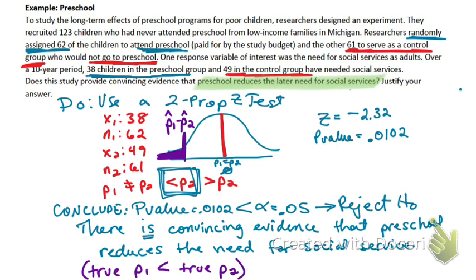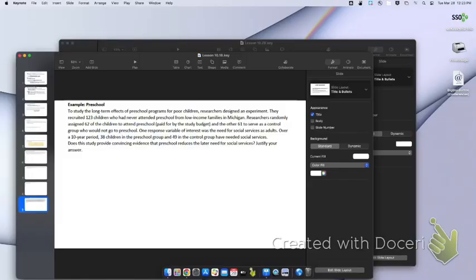This study was about preschool helping you not need social services — government assistance like food stamps or social security — later in life. That's what we just proved, apparently. Do you guys have any questions, concerns, thoughts, or feelings? Very good. Thank you.